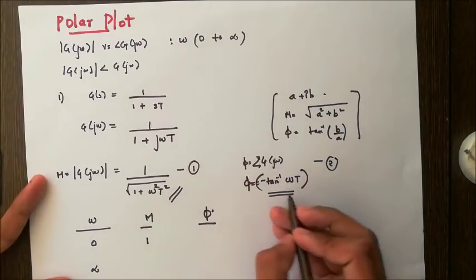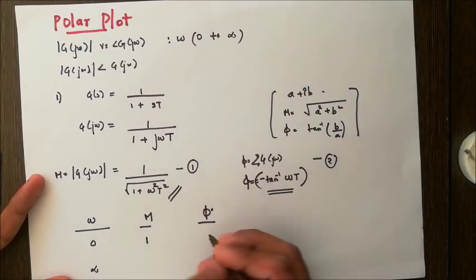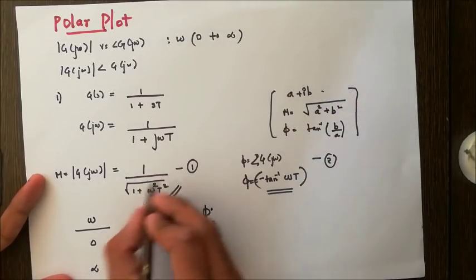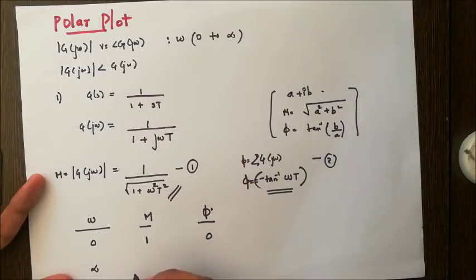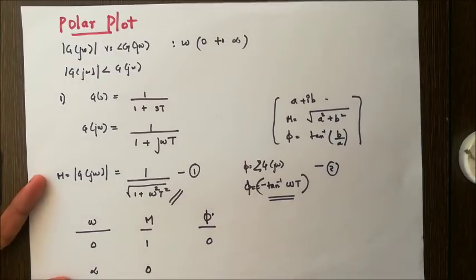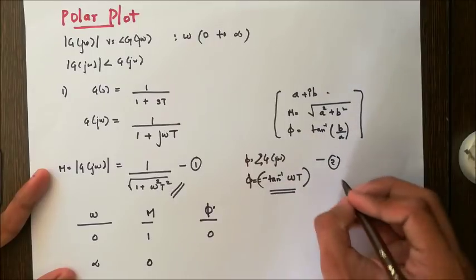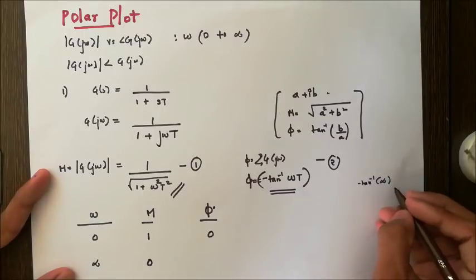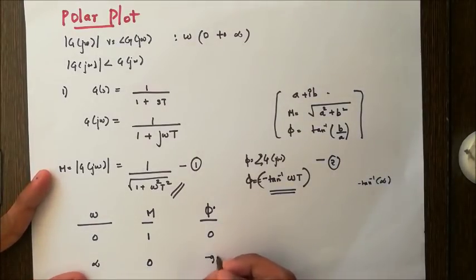Correspondingly, the phase angle is -tan⁻¹(0) = 0 degrees. Now for ω = ∞, the magnitude becomes 1/∞ = 0. For the phase angle, -tan⁻¹(∞) = -90 degrees. So at ω = 0: magnitude = 1, phase = 0°; and at ω = ∞: magnitude = 0, phase = -90°.